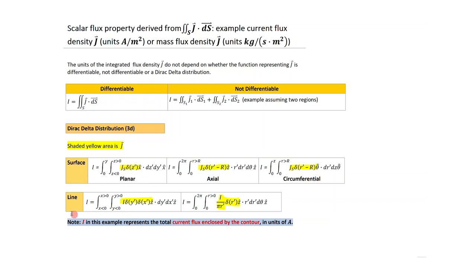For a line current, the total current enclosed: in Cartesian coordinates it is i times delta(y) delta(x), assuming the current filament is along the z axis in the z hat direction. In cylindrical coordinates, the differential area is r prime dr prime d theta and the current flows in z hat, with the Dirac delta function taking the cylindrical form. All we need is for r to be slightly larger than zero to capture everything needed from the Dirac delta function. The total current flux i enclosed by the contour has units of amps, derived via Stokes' theorem.